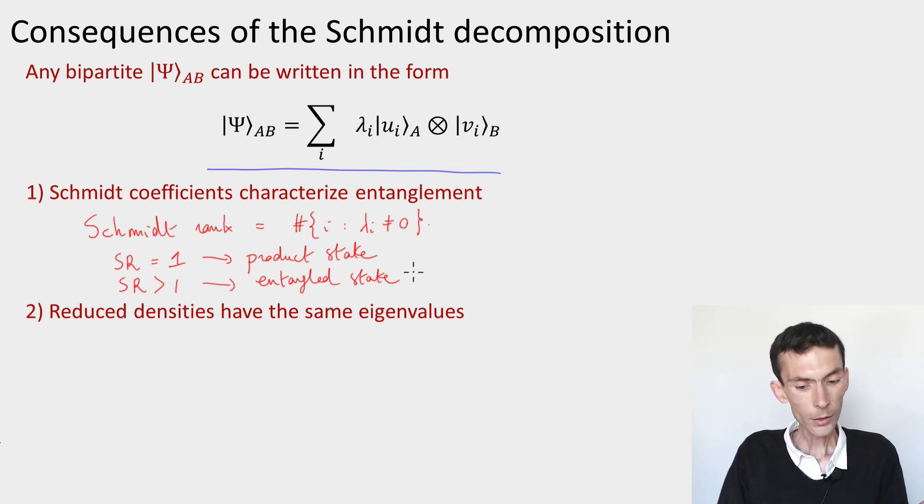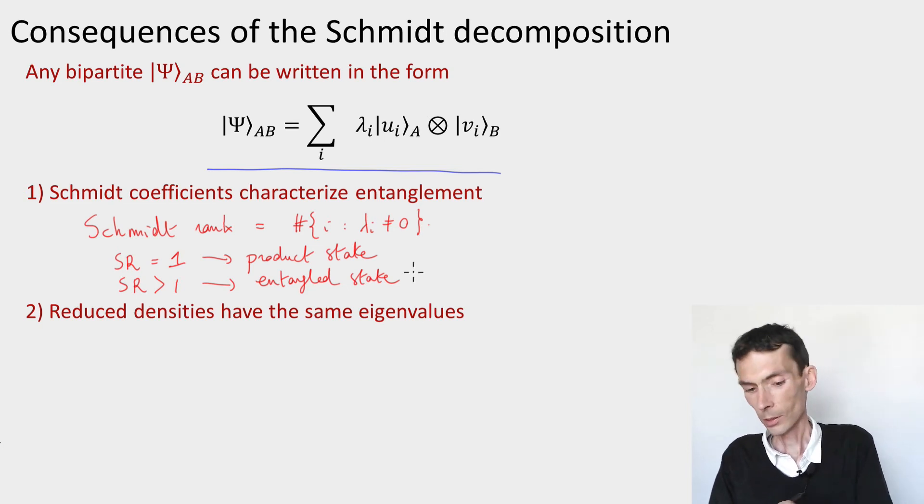Because you can see that there's one more thing that is interesting that we can see from this decomposition is that it splits the information about the state into three parts. There's a basis for the A system, a basis for the B system, and some coefficients that link these bases together.